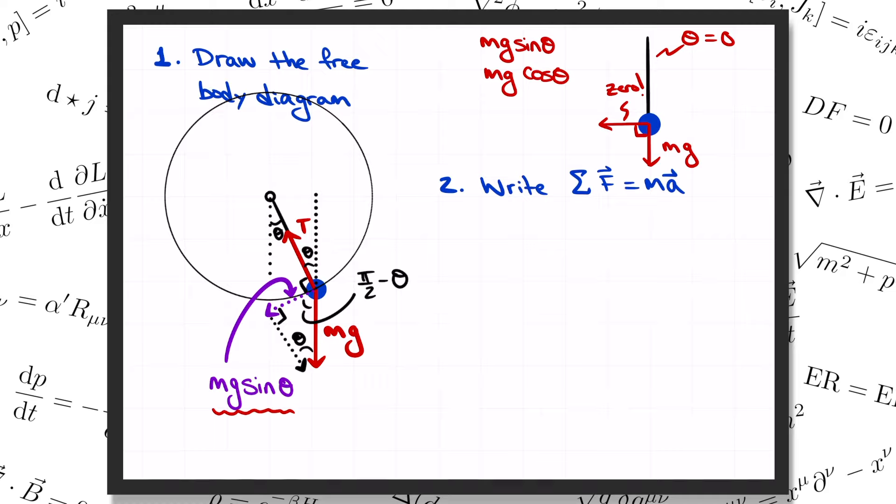Now we're ready to write the component of the f equals ma equation along the direction of the circle. We've only got the one force, minus mg sine of theta, minus because it's pointing back toward equilibrium, so the equation is m s double dot equals minus mg sine of theta. I'm using dots here to denote rates of change with respect to time. So if s of t is the position as a function of time, then s dot is the velocity, or the first derivative of s, and s double dot is the acceleration, or the second derivative of s.